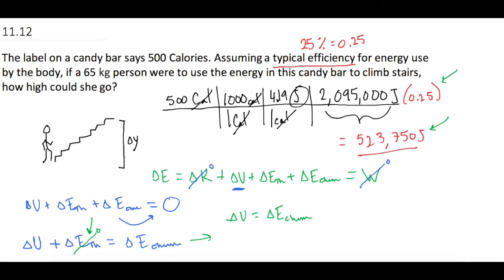So, now, let's substitute in what delta U equals. So, delta U, obviously, is Mgy, mass times gravity times the change in Y, which is equal to the change in chemical energy. So, now, we want to isolate delta Y. That's what we're looking for in the problem. So, let's divide both sides of the equation by Mg. And we have our final equation.